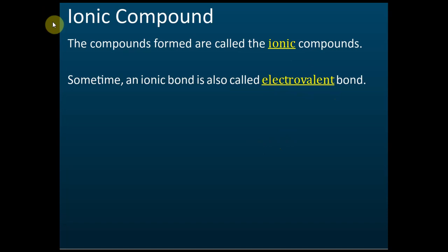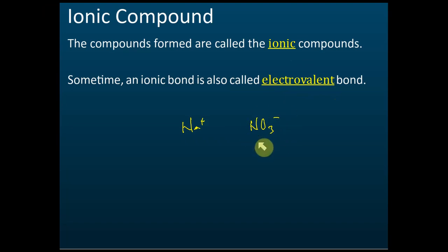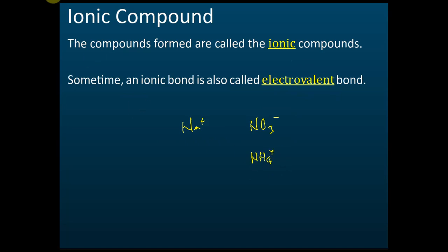For example, sodium is a positive element. But nitrate is not an element — if it's not an element, it's a non-metal but it can still carry a charge. Ammonium carries a positive charge — it's not a metal, but it's also not an element. So if it's an element and positive, it's a metal.